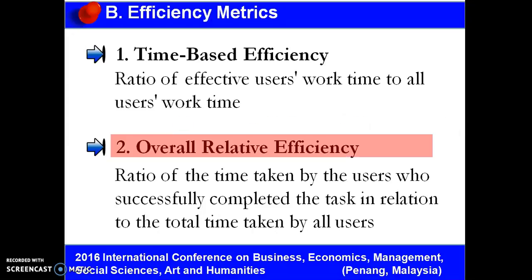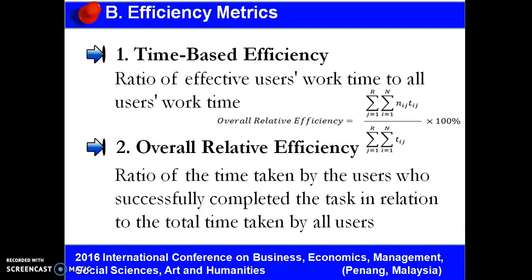The next metric is overall relative efficiency, which makes use of the ratio of the time taken by users who successfully completed the task in relation to the total time taken by all users. The formula is shown on the screen as well.